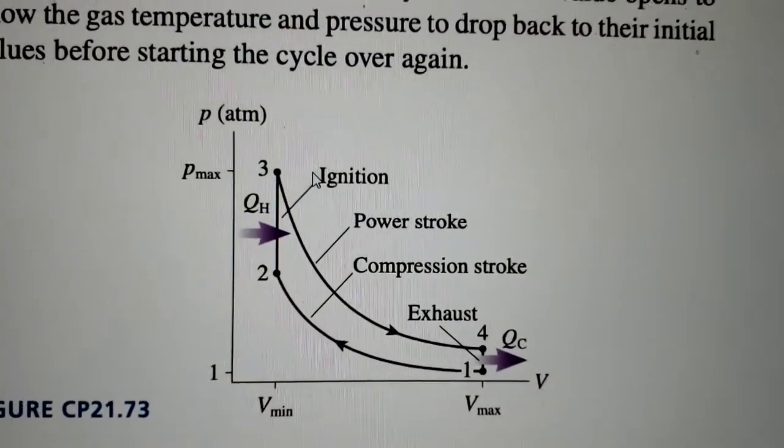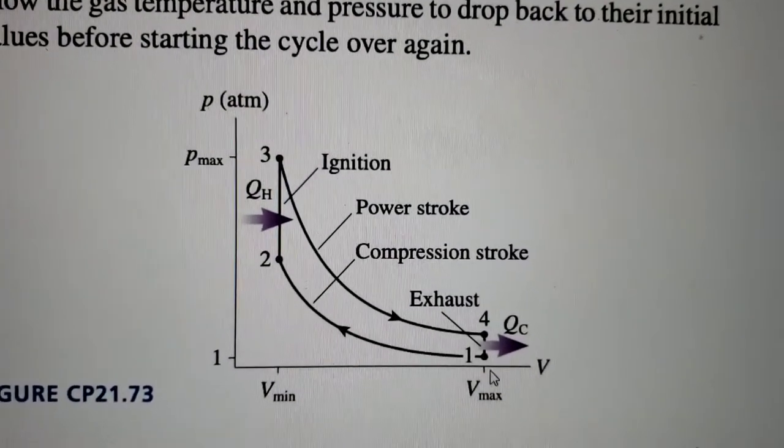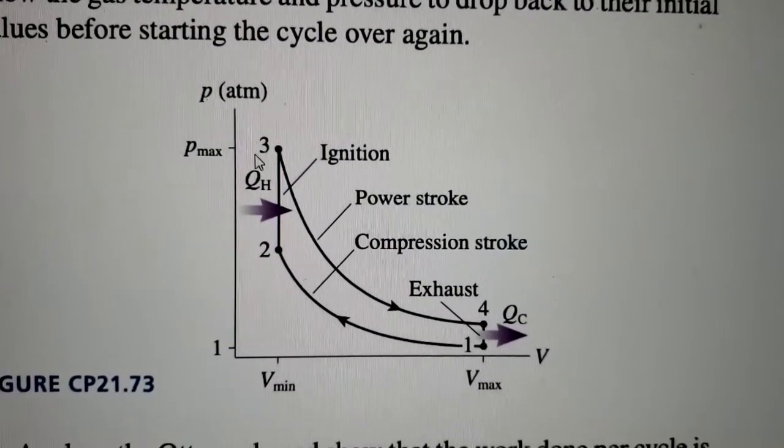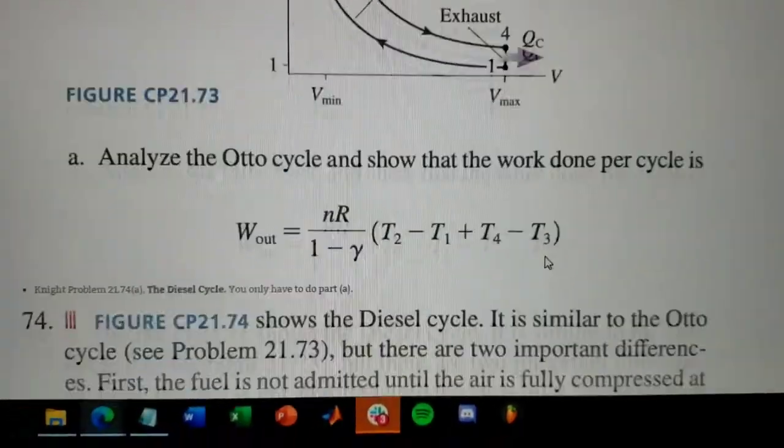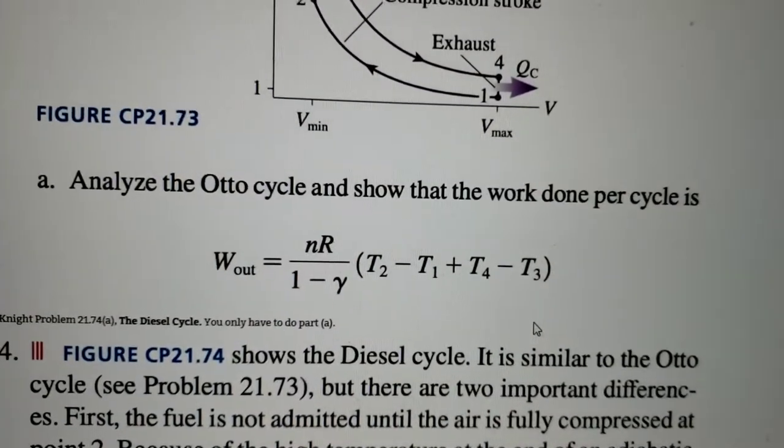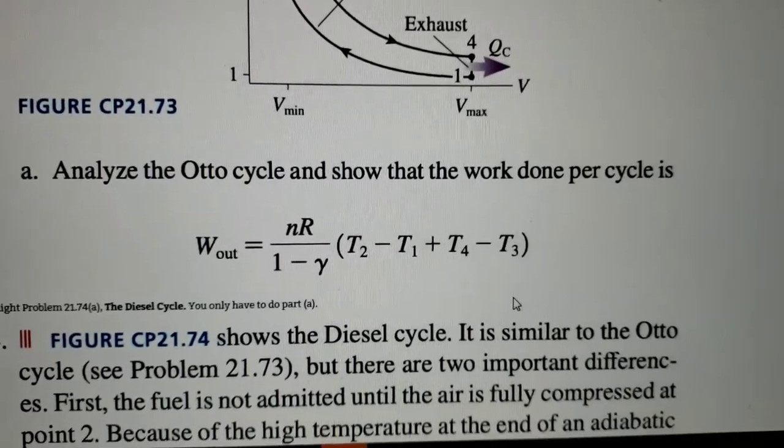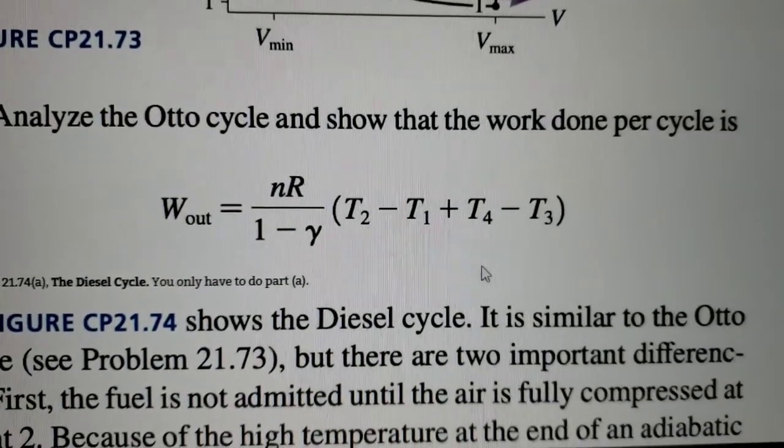We're given this diagram of the engine, so we have going from 1 to 2 to 3 to 4 in a clockwise manner. The problem wants us to analyze this cycle and show that work done per cycle equals this equation.